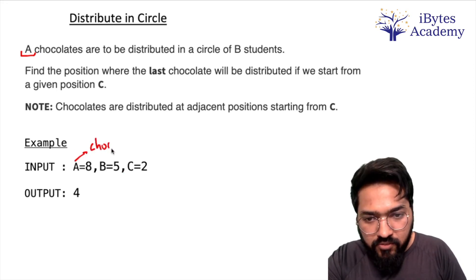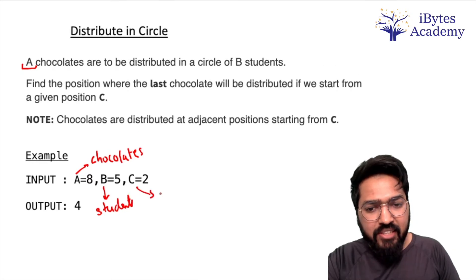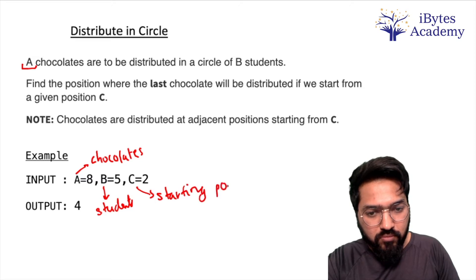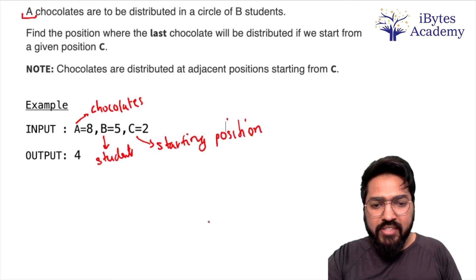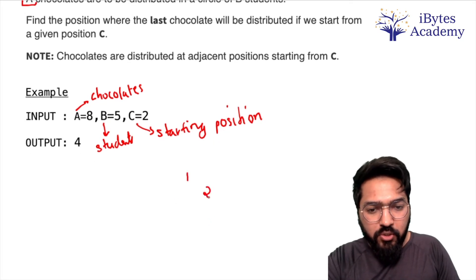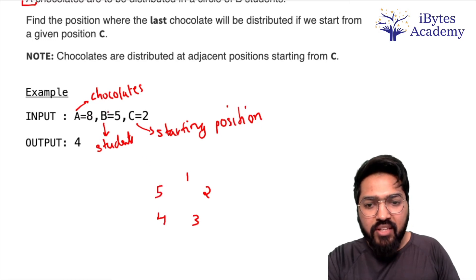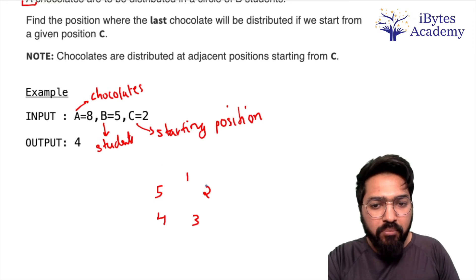In this particular example we have 5 students who are sitting in a circle: 1, 2, 3, 4, 5. There are 8 chocolates to be distributed. First chocolate will be distributed to student number 2, that is C equals 2.